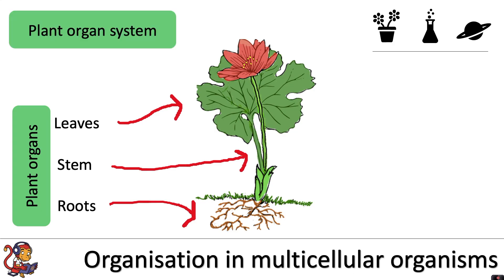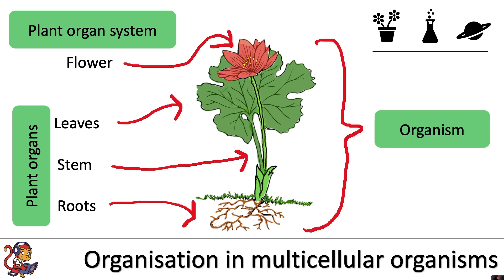An example of a plant organ system would be the flower with the male and female reproductive parts. And altogether, all of the organ systems together would form the organism, which in this case is the whole plant.